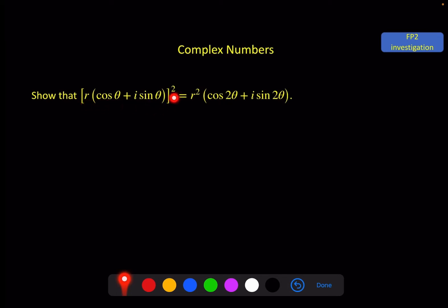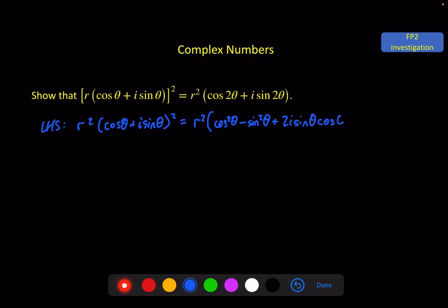Show that (R(cosθ + i sinθ))² equals R²(cos2θ + i sin2θ). Expanding: R² times (cosθ + i sinθ)² gives R² times (cos²θ + i² sin²θ + 2i sinθ cosθ), which is R²(cos²θ − sin²θ + 2i sinθ cosθ). Using trig identities, cos²θ − sin²θ equals cos2θ, and 2 sinθ cosθ equals sin2θ. So using trigonometric identities, we have shown that this is true.